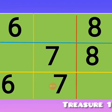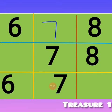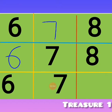The first number is number six, the second number is number seven, and the third number is number eight. So we have number six, number seven, and number eight. On the second line, the first number is number six, the second is number seven, and then we have number eight.